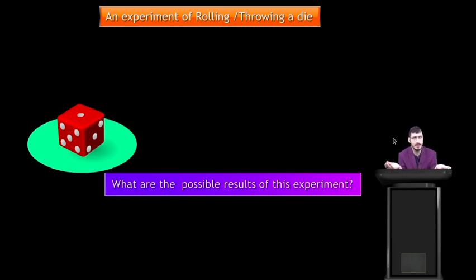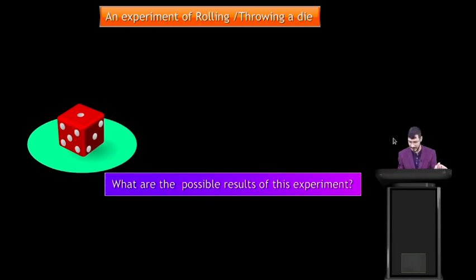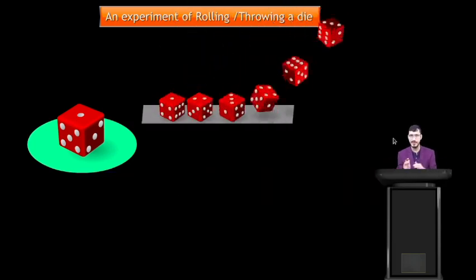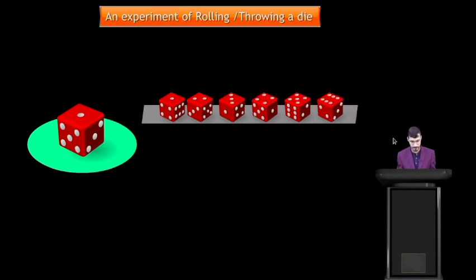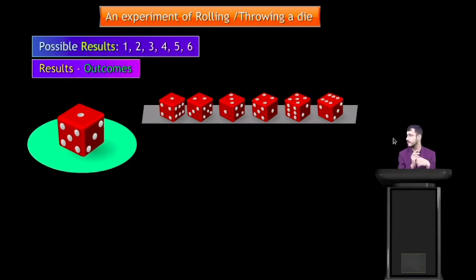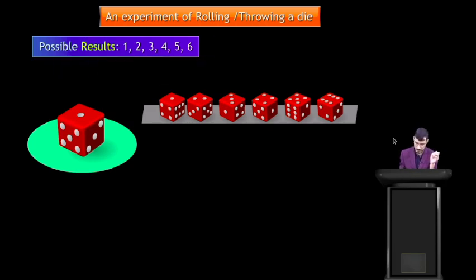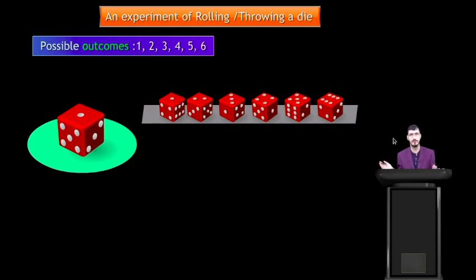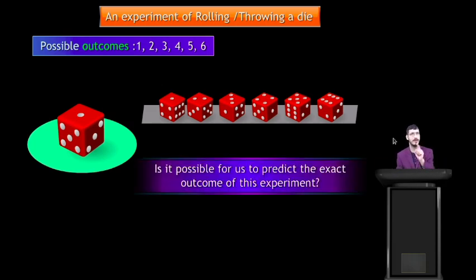What are the possible results of this experiment? There are 6 possible results: 1, 2, 3, 4, 5 and 6. In mathematics, results means outcomes — possible outcomes are 1, 2, 3, 4, 5, 6. Is it possible for us to predict the exact outcome? No, we cannot predict.